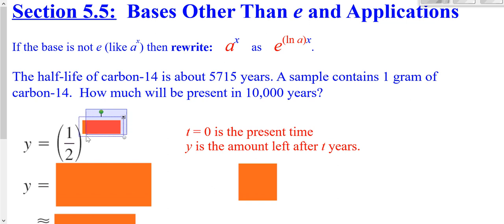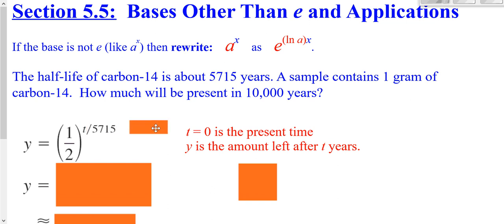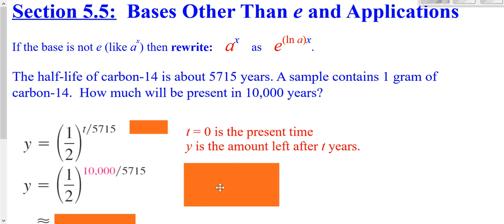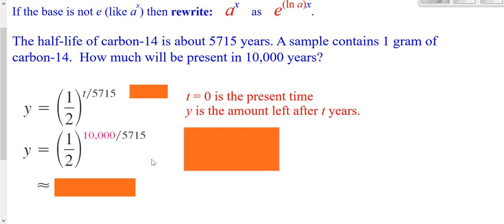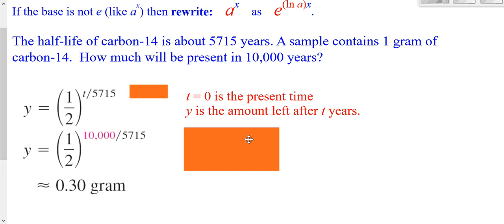The exponent has to be the number of half-lives. You take your total time divided by your half-life of 5,715 to figure out the number of half-lives. For our problem, our total time was 10,000, so we could put that in. Using our calculator, we'd get about 0.3 grams. So you started out with one gram — basically it's 30% left after 10,000 years.